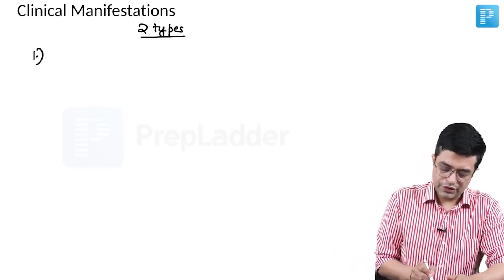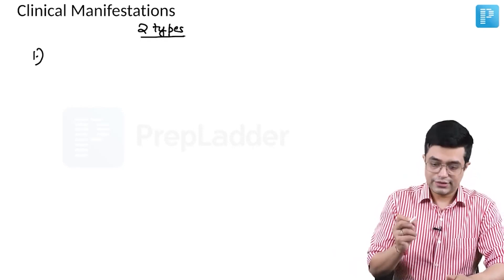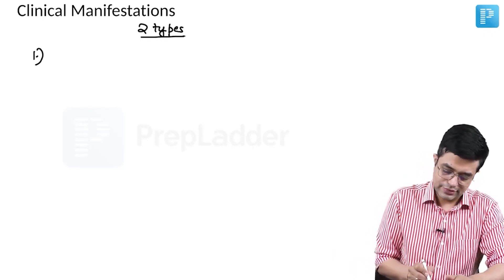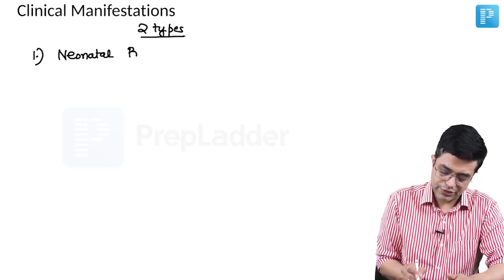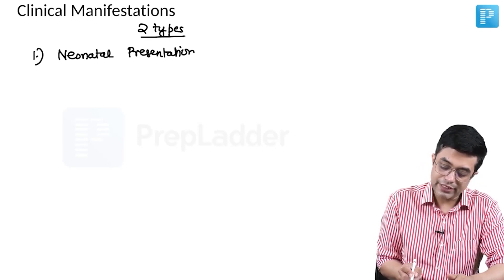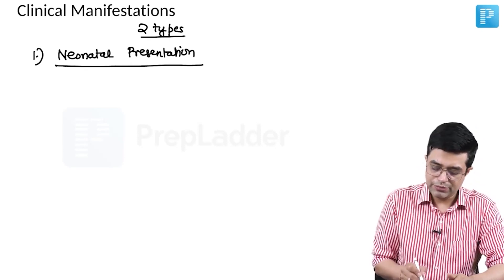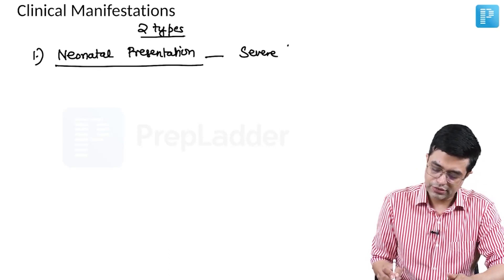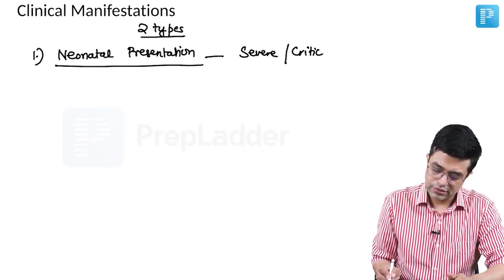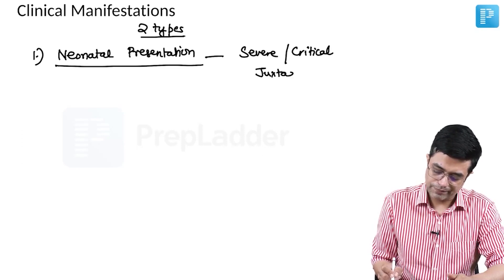The first form is the neonatal presentation, also called infantile presentation. This will happen in patients with severe or critical juxtaductal coarctation of aorta.